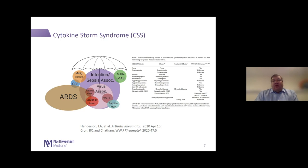HLH was recognized a number of years ago and there are classification criteria and an H score which predicts prognosis. These were developed specifically for HLH not associated with malignancy or infection, so you have to be a little cautious about using them. What you see on the right are a number of features including fever, anemia, thrombocytopenia, and other cytopenias that we see with COVID-19.